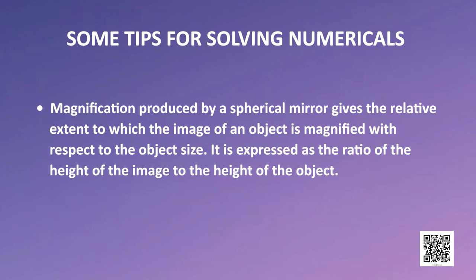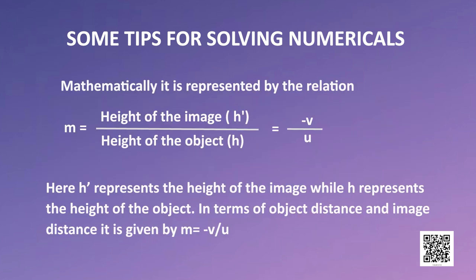Magnification produced by a spherical mirror gives the relative extent to which the image of an object is magnified with respect to the object size. It is expressed as the ratio of the height of the image to the height of the object. Mathematically, it is represented by m = h-dash / h. In terms of object distance and image distance, it is given by m = -v/u. A positive magnification implies a virtual and erect image, while a negative magnification means a real and inverted image. If the magnitude of magnification is greater than 1, then the image is enlarged with respect to the object.